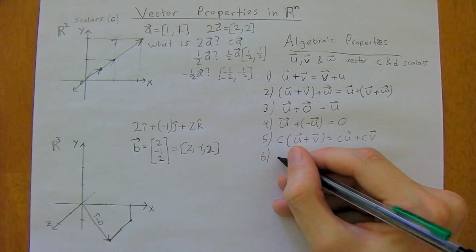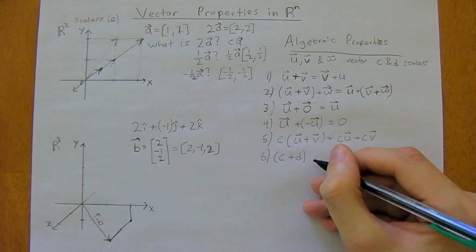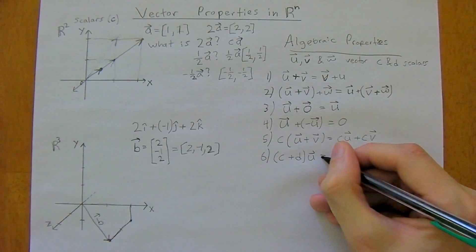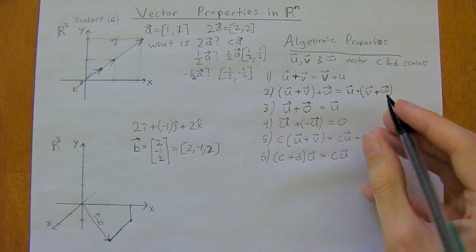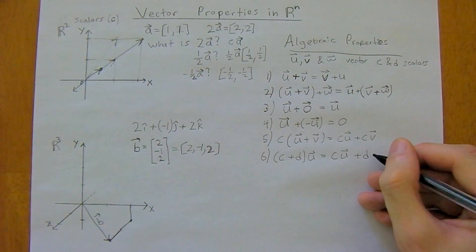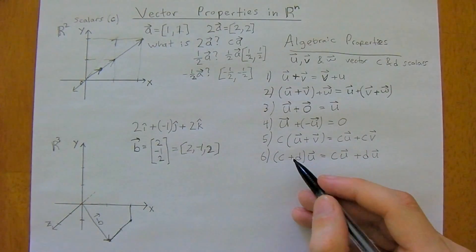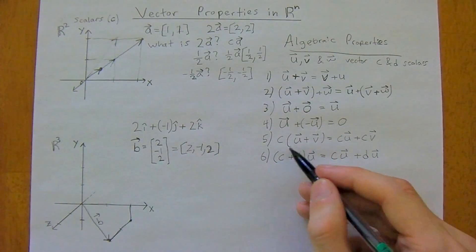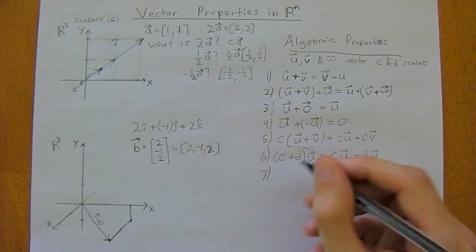And then we have, so we have two scalars now, so scalar c plus scalar d times vector u, well, this is equal to scalar c times vector u plus scalar d times vector u. So you know, again, you're just distributing this, multiplied by both of them, and we're almost done.